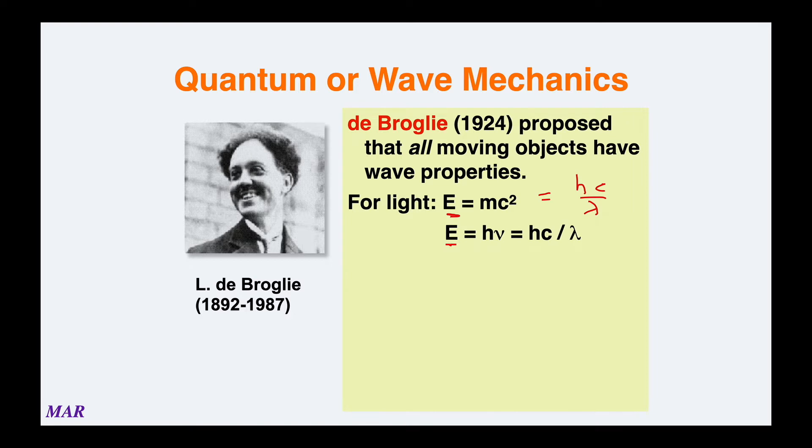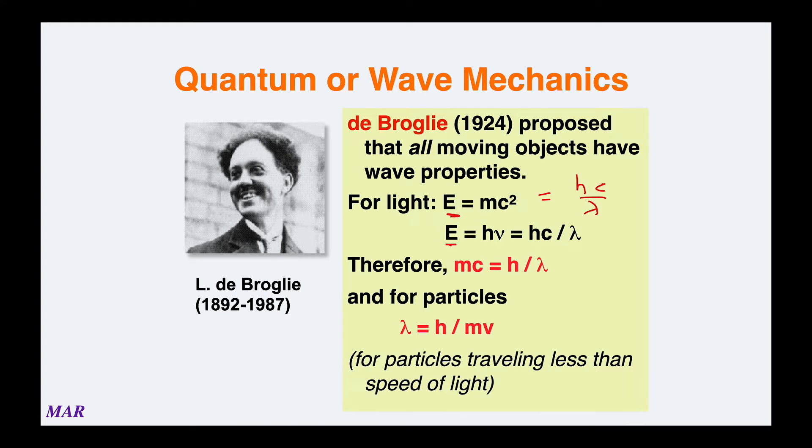He substituted in for the speed of light the velocity, so v here is the velocity in meters per second. When he rearranged it he got λ = h/mv.